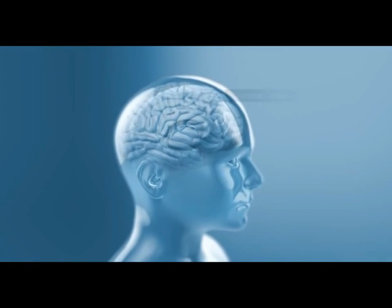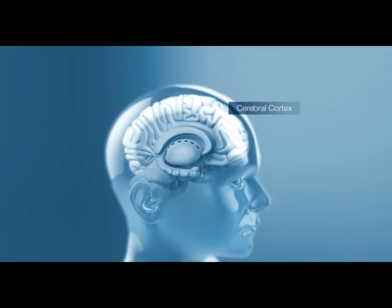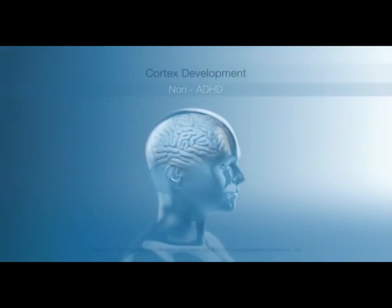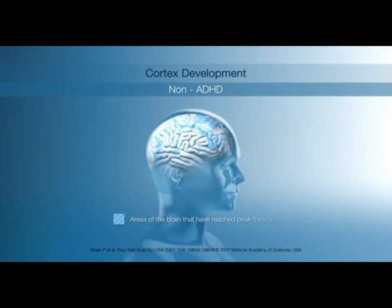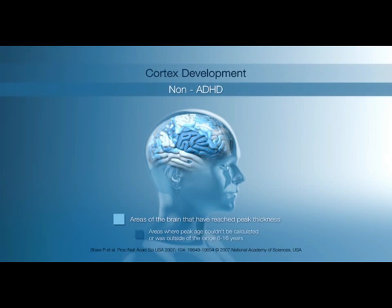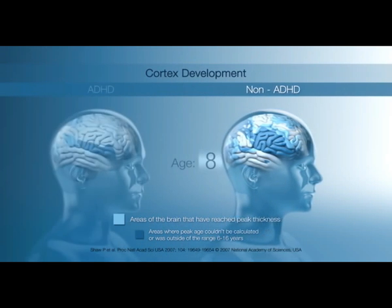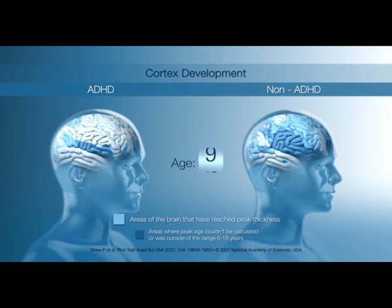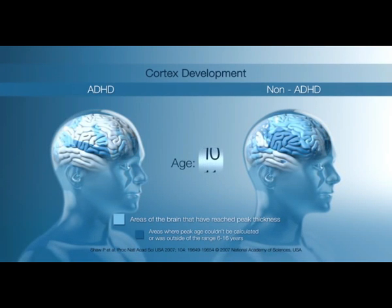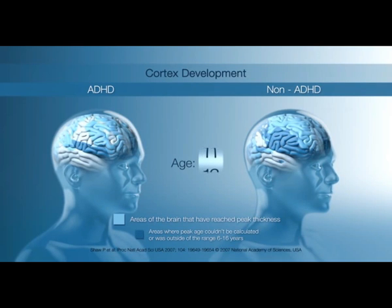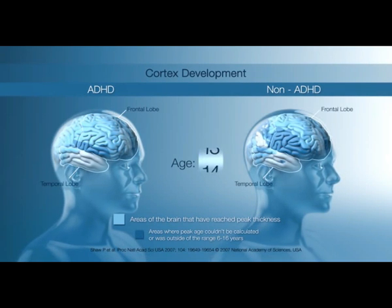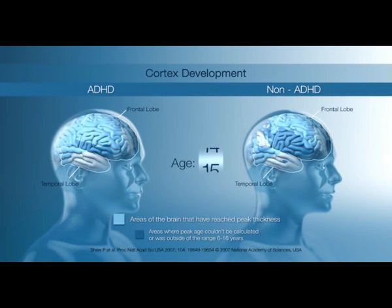Let's look first at the cortex, the brain's surface layer. In normal development, the cortex, which plays key roles in memory, attention, thought and language, gradually increases in thickness before reaching a peak during teenage years. Scans have shown that in children with ADHD, the cortex generally develops more slowly, particularly in frontal and temporal lobe regions, which are important for memory and controlling behaviour.